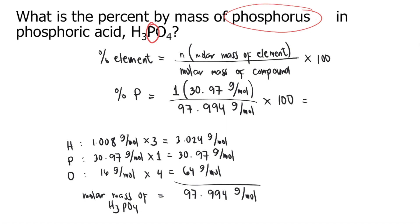So what is 30.97 divided by 97.994 times 100? You will get approximately 31.6%. So the answer to this question is 31.6% by mass.